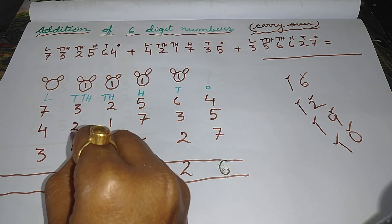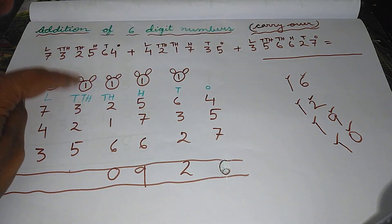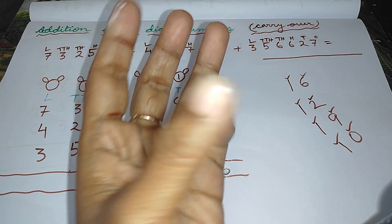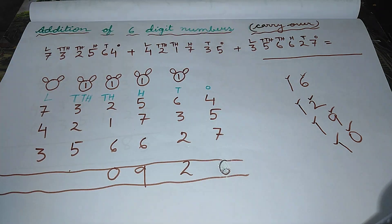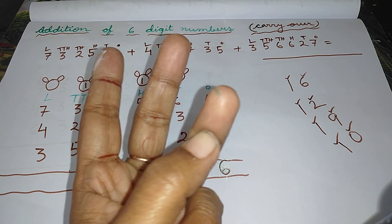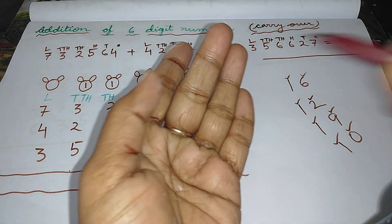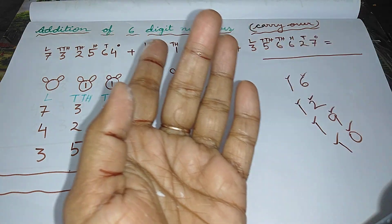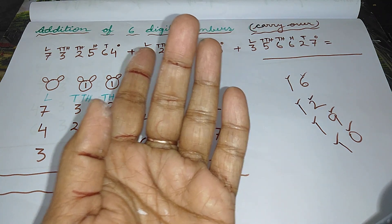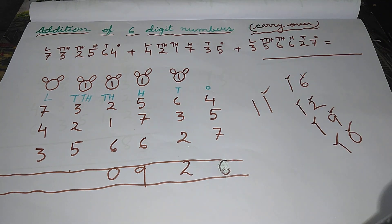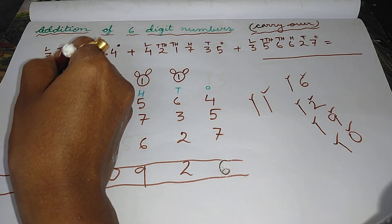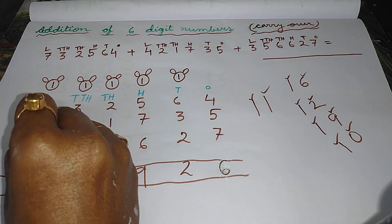Now add all these digits. The first digit is one. The second is three, count three more. Then two, count two more. Then five, count five more — giving a total of eleven lines. Write the last digit in ten-thousands column and carry the first digit, that is one, into the next column, that is the lakh's column.